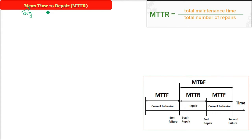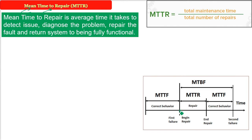Mean Time to Repair, MTTR — time to repair means: if something goes into failure, how much time will it take to repair it? So a failure has happened and we are talking about the time to get it repaired. The failure occurs, there is a repair time, and when the system starts behaving correctly again, that is the mean time to repair.